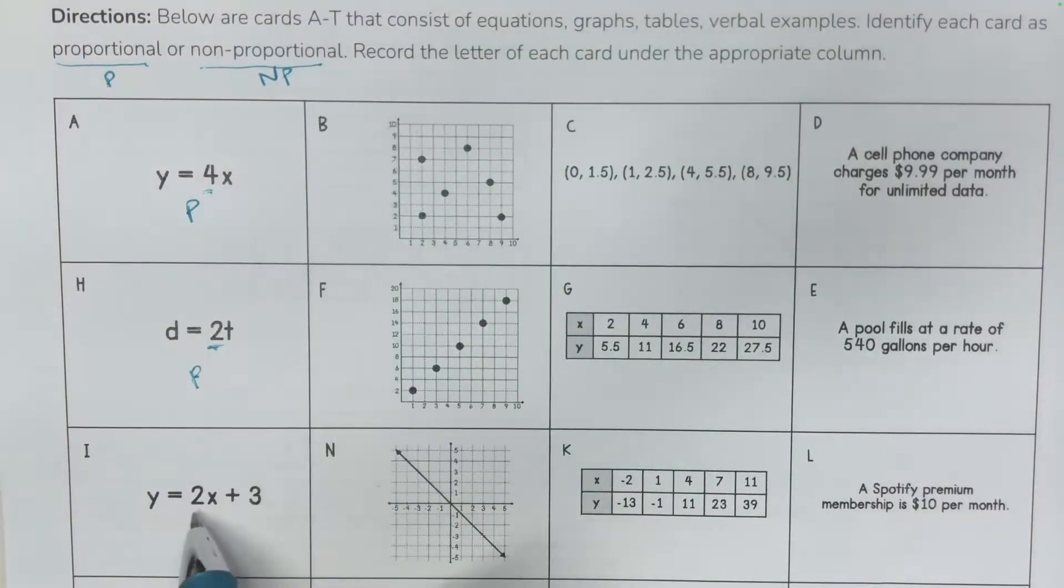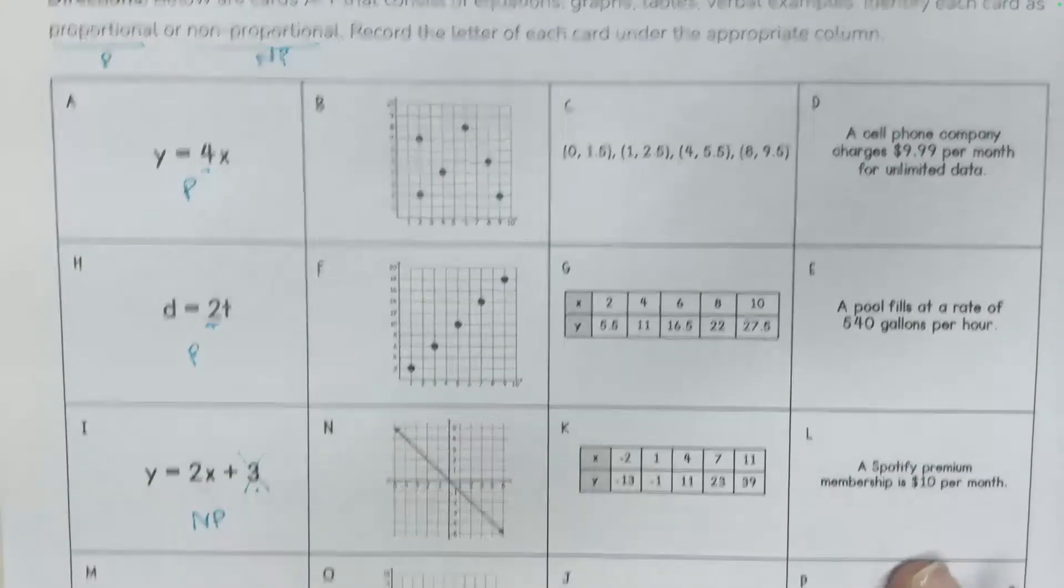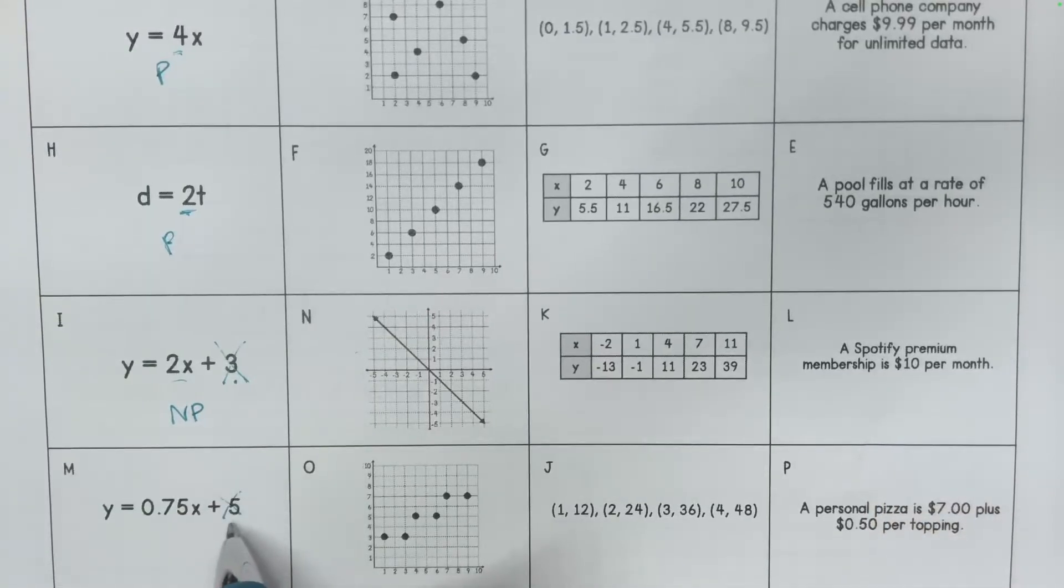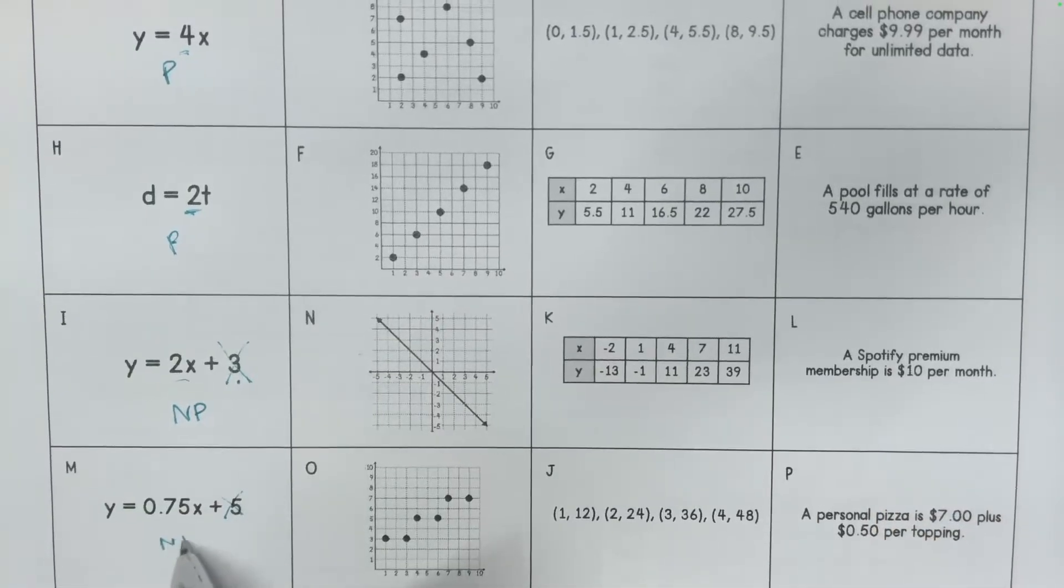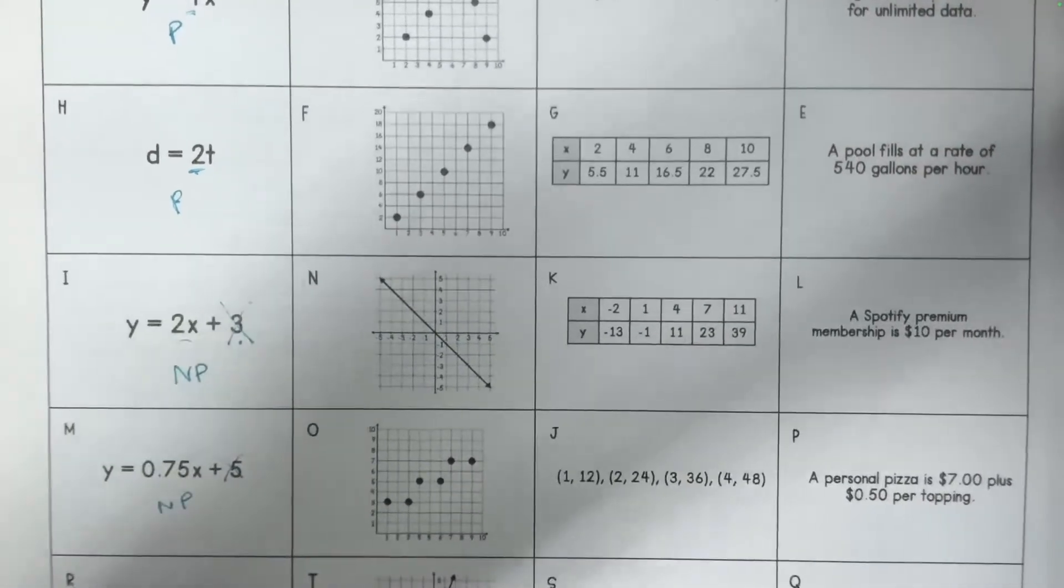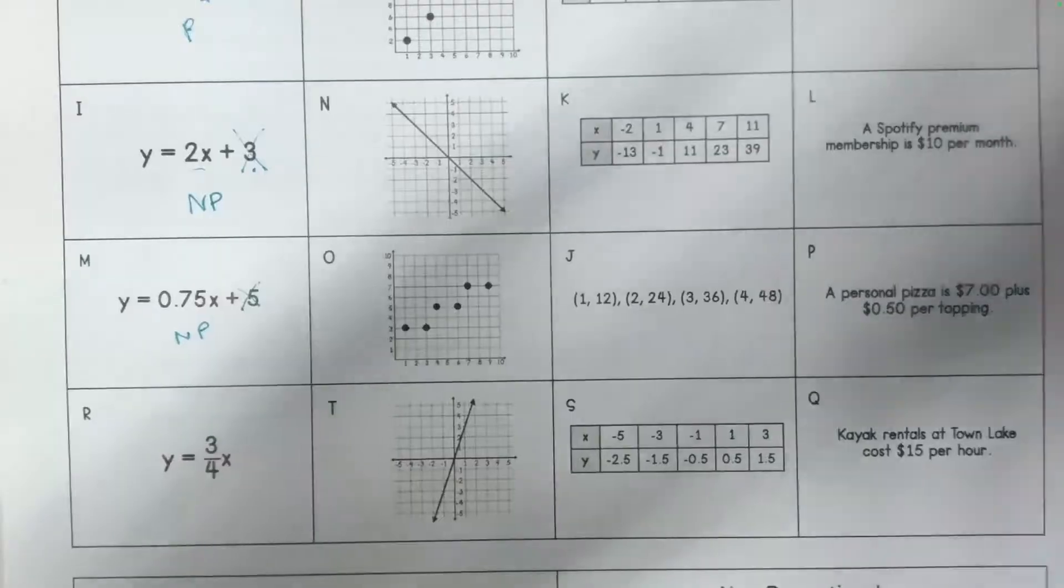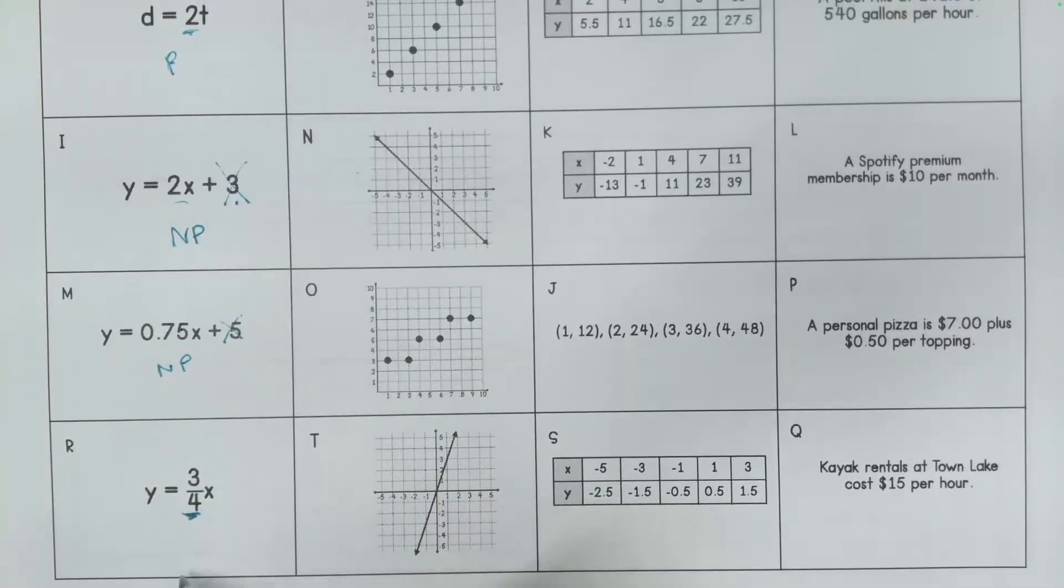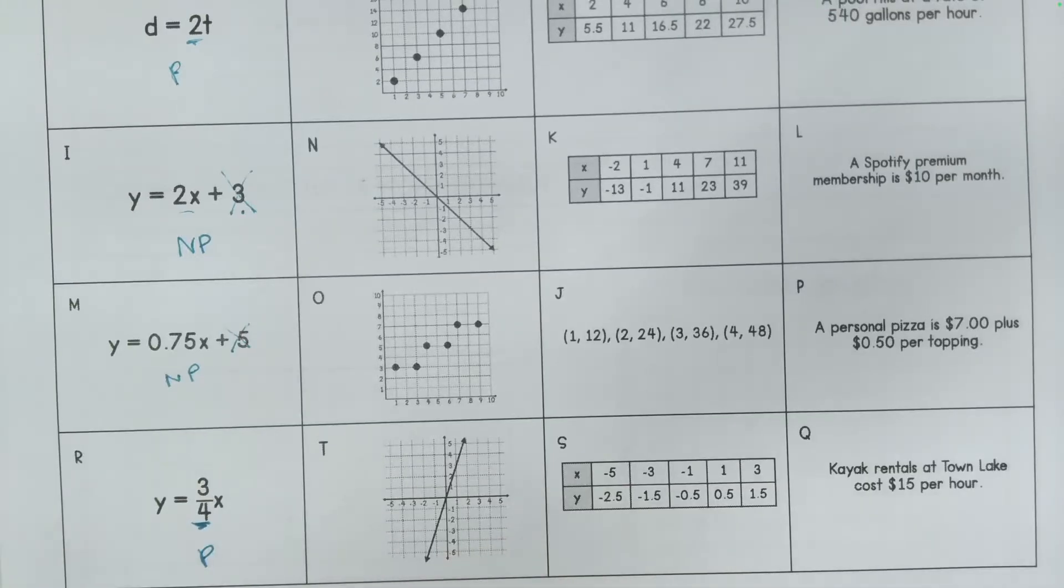We have a rate and an initial value. So this makes it not proportional because it started off with some initial value. Again, we've got some type of initial value happening here. So this one's not proportional. And the last one is that we have y equals three fourths x. So again, this is some constant times the variable x, so this is proportional. So we have a few of those that are proportional.